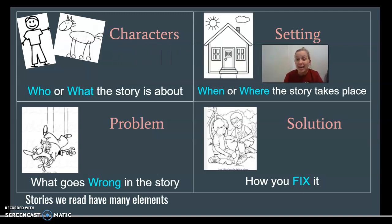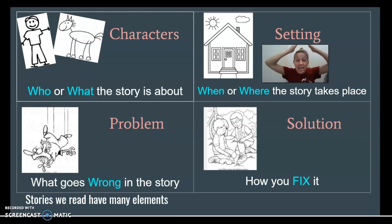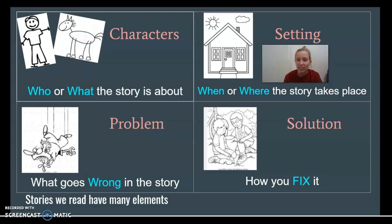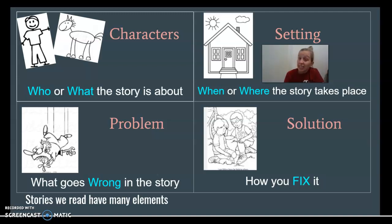Our setting — remember — is when or where the story takes place. In The Little Red Hen, the setting was out in the field and also in her kitchen. We don't say that a setting is just outside or inside, because that doesn't tell us very much information. We want to say where outside, like in a field, or where inside, like in the kitchen.